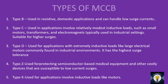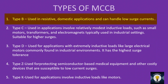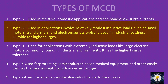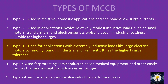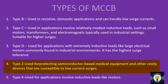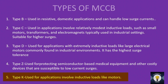Type B MCCB is used in resistive or domestic applications and can handle only low surge currents. Type C is used in commercial applications involving modest inductive loads such as small motors, transformers, and electromagnets. Type D has the most surge tolerance, used for relatively high inductive loads like large electrical motors — more of an industrial type. Type Z is used to protect delicate semi-controlled equipment as it has the lowest surge tolerance and trips between 2 to 3 times full load current. Type K is used for the protection of inductive loads such as motors.